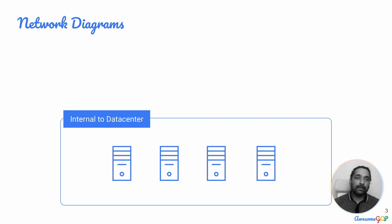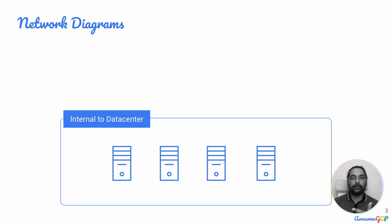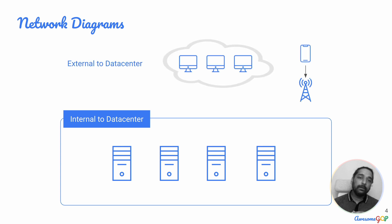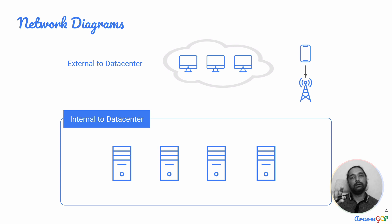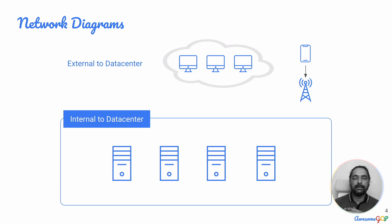If you consider how network diagrams are drawn earlier, there used to be the segmentation of different layers. One of those layers used to be the representation of the internal data center, and there would be multiple machines that were internal to one data center. Then there would be all the machines and devices that were external to the data center, shown on another horizontal layer — for example, a mobile going via an ISP, or machines communicating from a private data center.